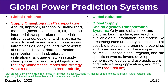Global Problem — Supply Chain / Logistics / Transportation: absurd, improper, irrational, or similar road, maritime, air, rail, and intermodal transportation infrastructures, designs, and investments; similarly pipeline and telecommunications infrastructures, designs, and investments; absence and lack of data, information, optimization, standardization, and unification in supply chain, passenger and freight logistics, etc. Global Solution — Global Supply Chain / Logistics / Transportation Systems: learn, archive, and teach all available data, information, and models; prepare and monitor open-source GIS-based global, regional, and site-specific networks; invent, develop, demonstrate, deploy, and use applications and early warning applications, and many more.